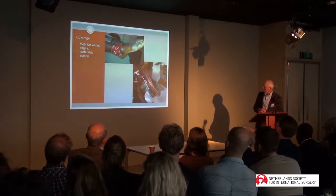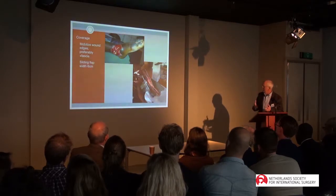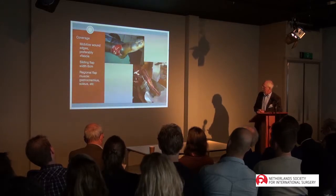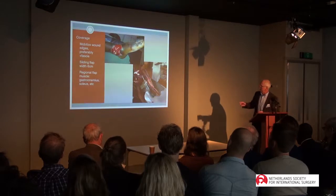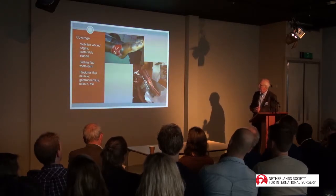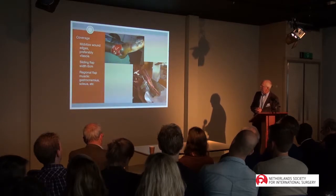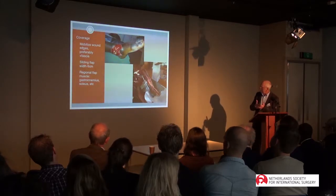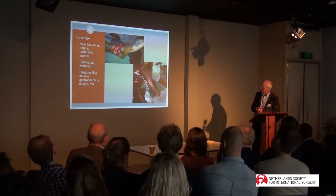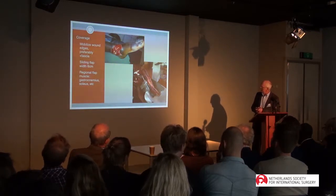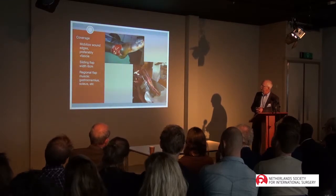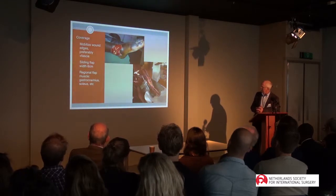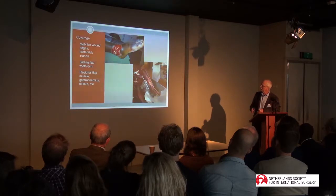Coverage of the bare-lying bone is mandatory. If not covered, it dries out and becomes a sequestrum. For the proximal and middle parts of the tibia, you can easily perform a muscle flap — for instance, the gastrocnemius or soleus, which is not so difficult. For the distal injury, it will be difficult to find an appropriate and viable flap, and other means are required.